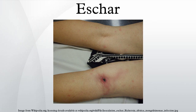Eschar may require surgical removal to prevent infection, especially in immunocompromised patients. If eschar is on a limb, it is important to assess peripheral pulses of the affected limb to make sure blood and lymphatic circulation is not compromised. If circulation is compromised, an escharotomy, or surgical incision through the eschar, may be indicated.